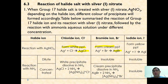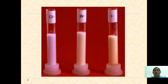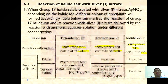If iodide is used, a yellow precipitate of silver iodide forms. The diagram shows all three precipitates: white for silver chloride, cream for silver bromide, and yellow for silver iodide. These silver halide precipitates are further treated with ammonia aqueous solutions.